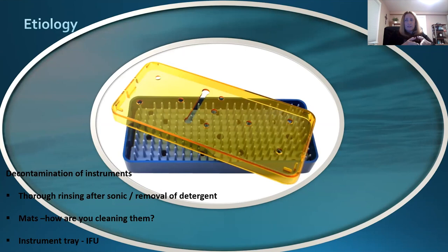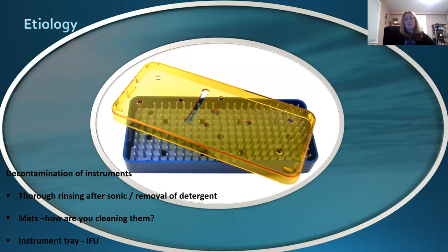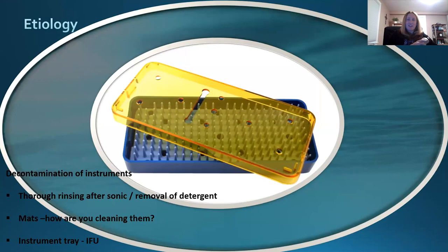Not just your instruments, but also your instrument trays. Everything has an IFU and it's going to tell you how to clean things. Look at those mats — those little 'finger' mats in the trays are very important. Those mats can get contaminated. Pull them out, clean them well underneath, according to the IFUs. Make sure these instrument trays are not used over and over without being cleaned. These trays need as much attention as your cannulas and instruments do.